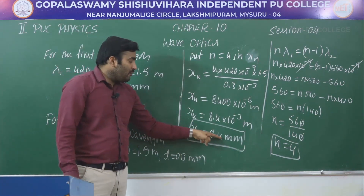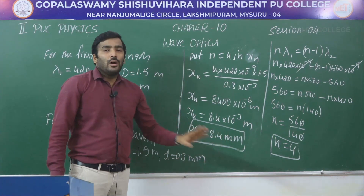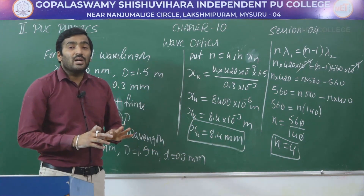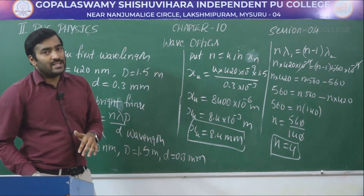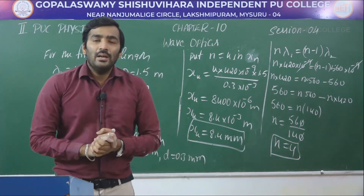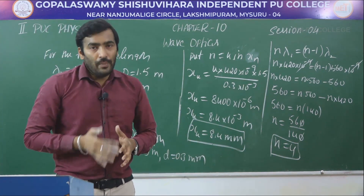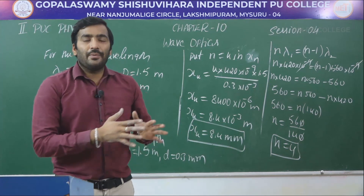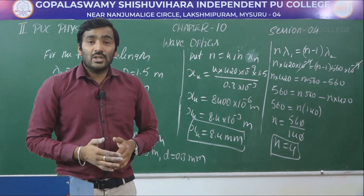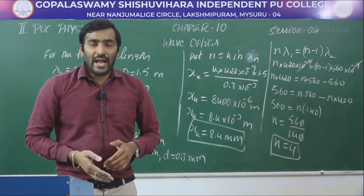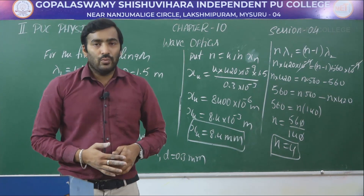At a distance of 8.4 millimeter from the center, the bright fringes of both wavelengths coincide. In this session we solved some important numericals on the chapter Wave Optics. In our next session we will be learning about the diffraction of light. Thank you.